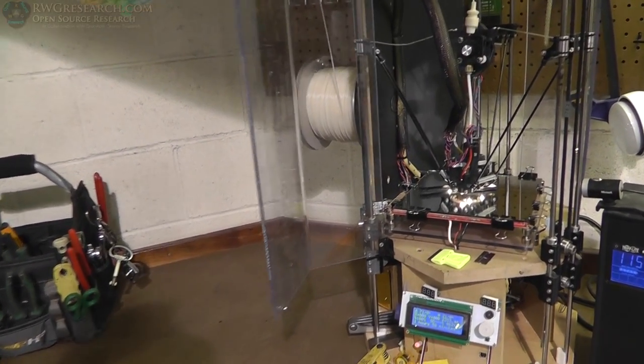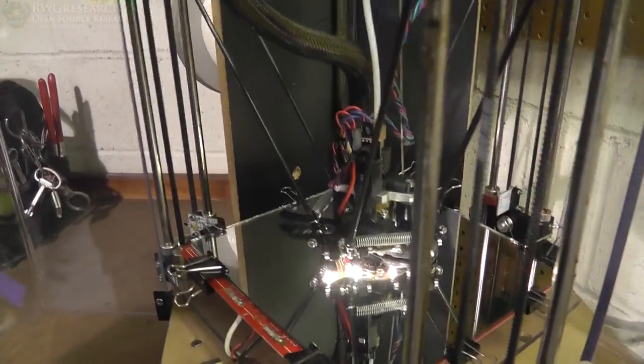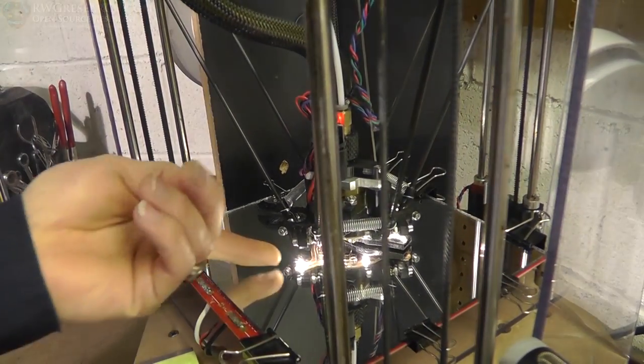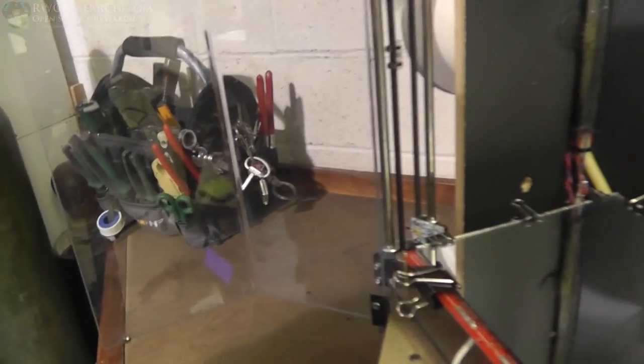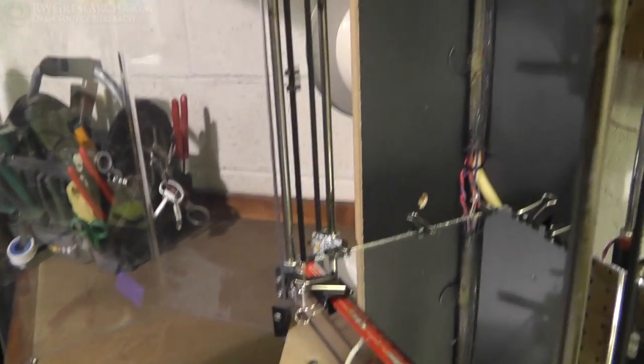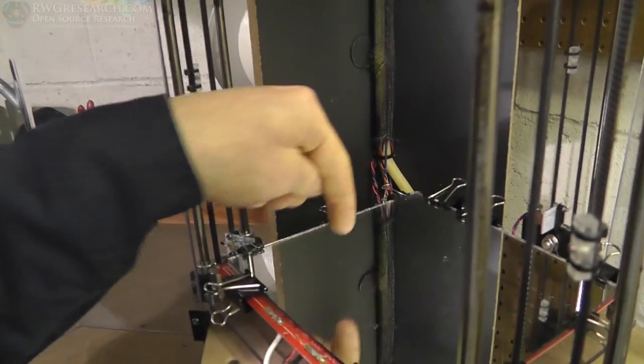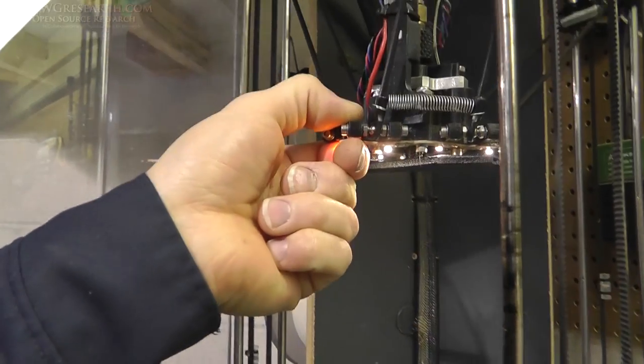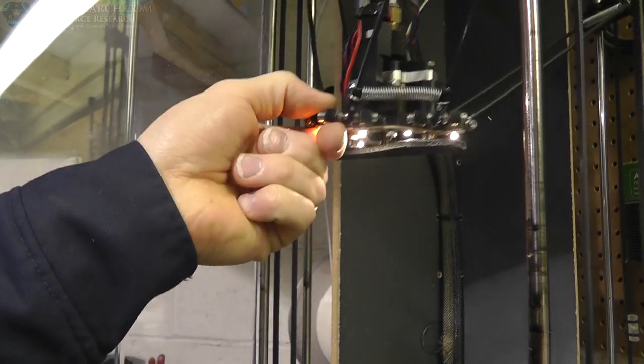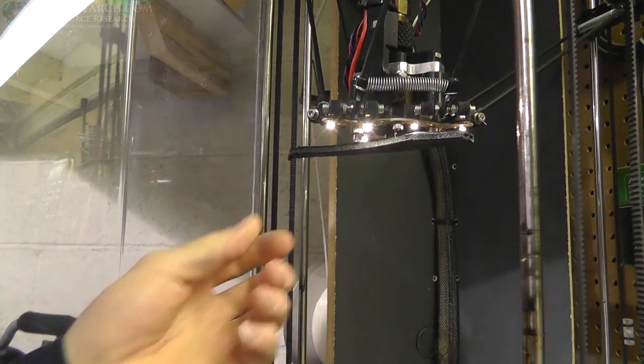So I usually do this every once in a while because if this thing starts to get pretty bad, I mean it usually happens whenever I'm starting a print and it kind of gets stuck on there. But when it gets bad, sometimes it makes better prints if you clean this thing off. So this is how you do it.